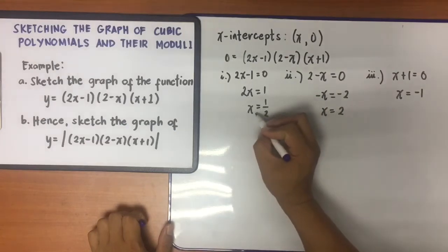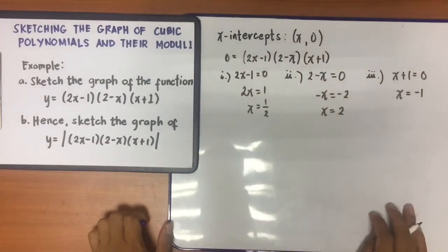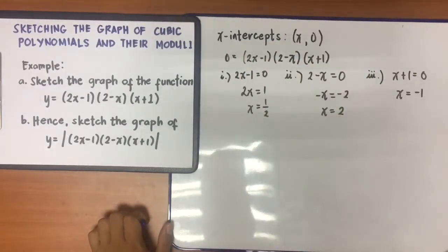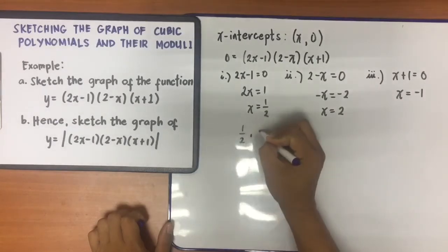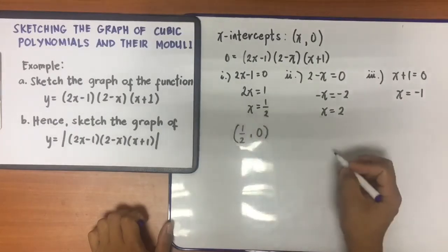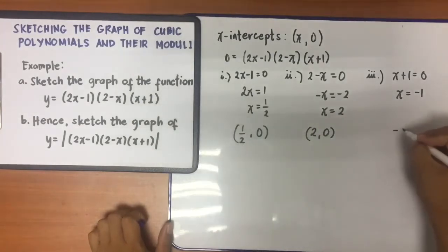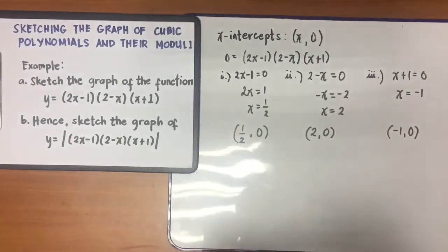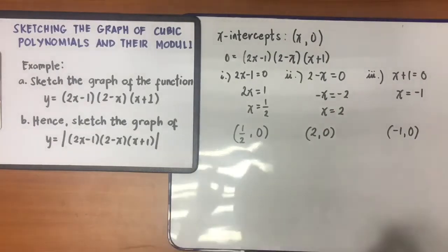So these are the values of x for the x-intercepts. They will be written as the ordered pairs (1/2, 0), (2, 0), and (−1, 0). That is how we find the x-intercepts.